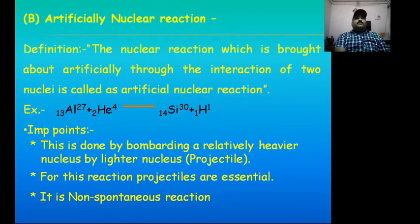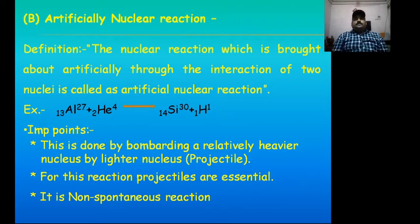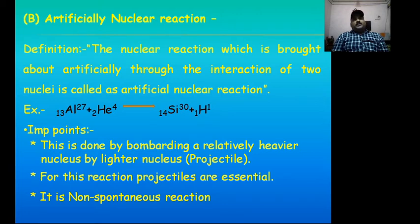The second type is artificial nuclear reaction. The nuclear reaction which is brought about artificially through the interaction of two nuclei is called artificial nuclear reaction. That means two nuclei are artificially brought to interact to form a product nucleus — also known as recoil nucleus — and an emission or ejectile. Example: Aluminum-27 and alpha particle, where alpha particle acts as projectile, which bombards on the nucleus of aluminum to form Silicon-30 as a recoil nucleus and a proton as ejectile.